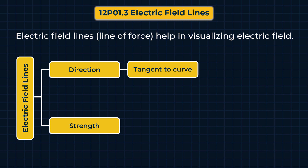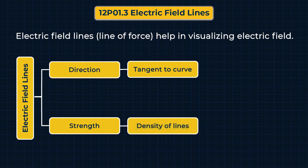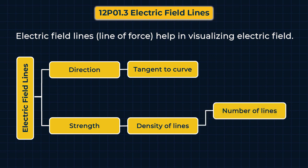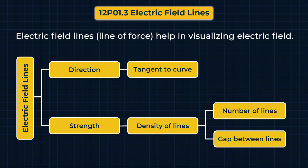For the strength of the electric field, we look at the density of lines. Density of field lines can be calculated by the number of lines or by the gap between lines. If density is large in any region, the strength of the electric field is strong there. If density is small, the electric field will be weak.